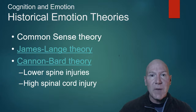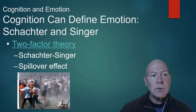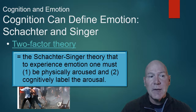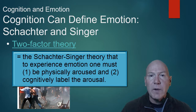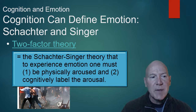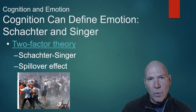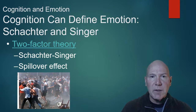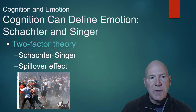Sometimes cognitive appraisal has a lot to do with what we sense. Schachter and Singer came up with the two-factor theory. In this theory, we have a physiological response to a threat or whatever emotion we're experiencing, and then we have a cognitive appraisal to label what that means. Many physiological responses to different emotions are very similar — fear and anger, for instance, both cause a pounding heart and butterflies in the stomach, just like love does. So we have to cognitively label what that physiological response is.